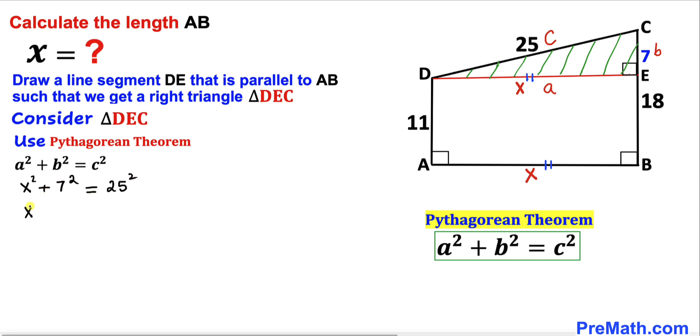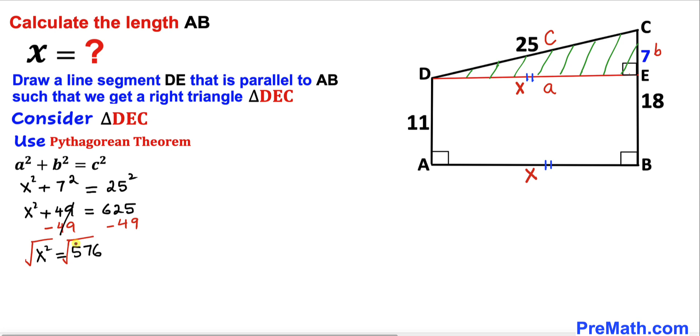Let's go ahead and simplify this thing. So x² plus 49 equals 625. Let's go ahead and subtract 49 from both sides. This is gone, therefore x² turns out to be 576. Take a square root on both sides to undo this square. This square and square root is gone.